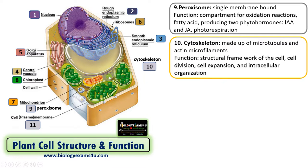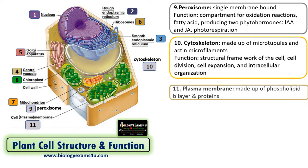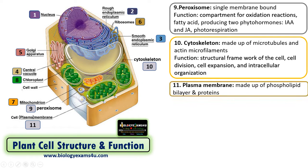The next organelle is the cell membrane or plasma membrane. It is made up of phospholipids and proteins. This membrane is selectively permeable and maintains a constant internal environment within the cytoplasm.